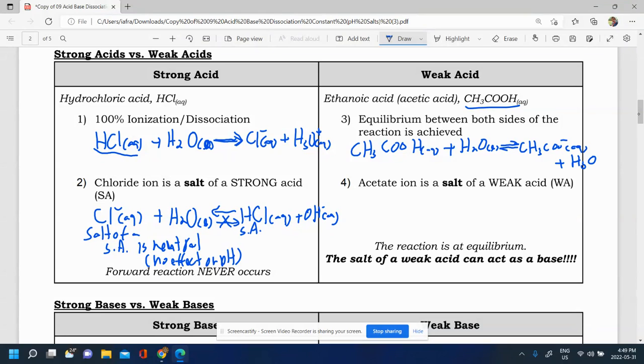Now suppose we took this salt here, the acetate salt, and we did a hydrolysis with it. So CH3COO minus aqueous plus H2O. We would get that the H would combine with the acetate, because the H is positive, the acetate is negative. So this here, plus some OH minus.